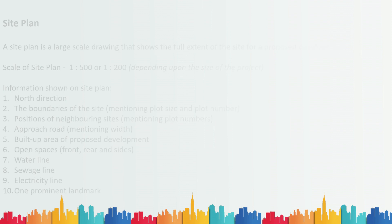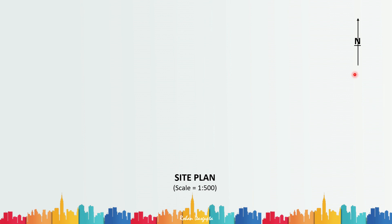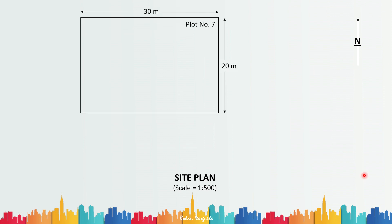With a quick example, let me show you how to draw a site plan. The first thing required is the north direction — here I have shown the north direction. Secondly, you have to show the plot. For simplicity I have taken a rectangular plot, given it a plot number of seven, and the size of the plot is shown as 20 meters by 30 meters. Obviously if it is an irregular plot you have to show the size on all four sides, or even five or six sides, however irregular your site is.